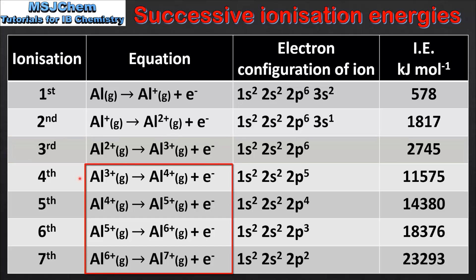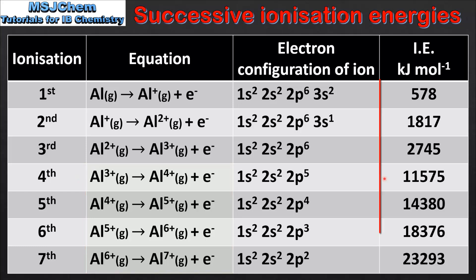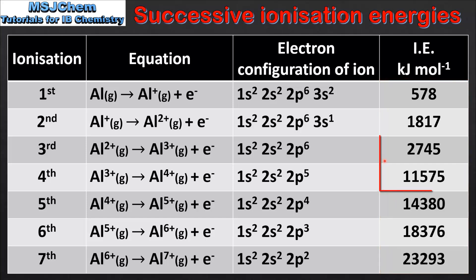As we go down the table we can see that the charge on the ion is increasing, and the ionization energy is also increasing. The reason for this is that the electrons are being removed from an increasingly positive ion, which causes an increase in the attraction between the nucleus and the remaining electrons. Also note the large increase in ionization energy between the third and fourth ionizations. The reason for this will be explained later in the video.